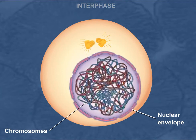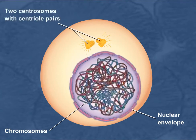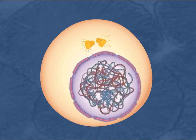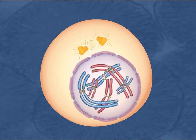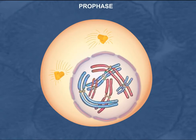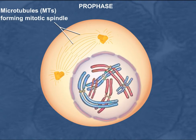In animal cells, these centrosomes are formed from centriole pairs. As cells leave interphase and begin prophase, the first stage of mitosis, the chromosomes begin to condense. The nuclear envelope begins to vesiculate, and the centrosomes migrate to opposite ends of the cell to define the two poles. During prophase, the mitotic spindle apparatus begins to form by the polymerization of tubulin proteins, creating microtubules that emanate from each centrosome.